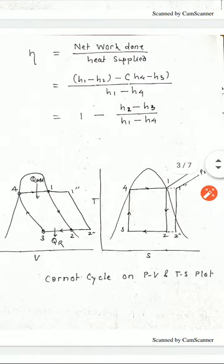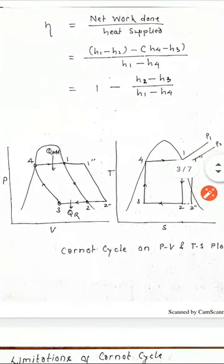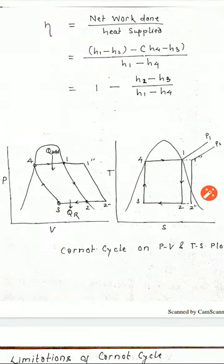This is the PV and TS plot of Carnot cycle. The major things to note in the Carnot cycle, which is the limitation of Carnot cycle.